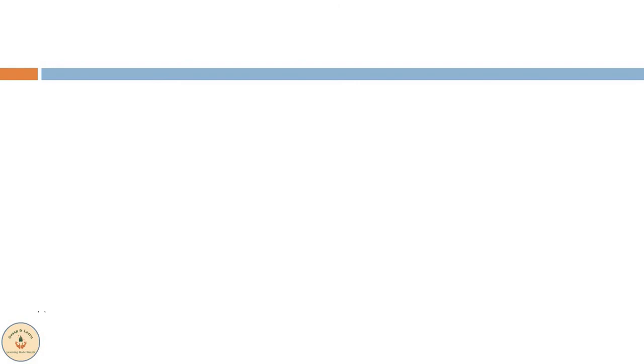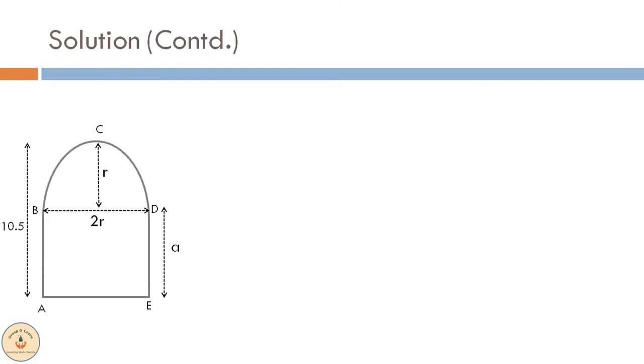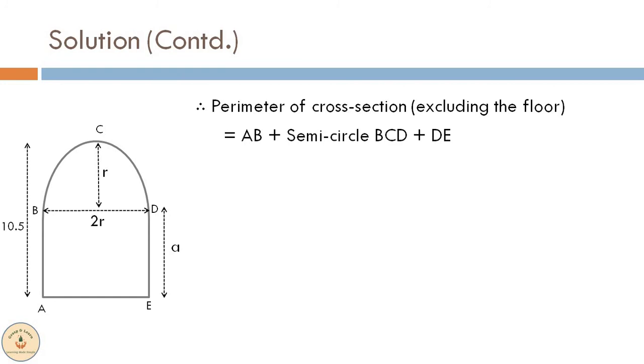To solve further, we need to calculate the perimeter of the cross section of the tunnel excluding the floor, since we need to find the cost of plastering the tunnel without the floor. The perimeter of the cross section would be side AB plus semicircle BCD plus side DE.